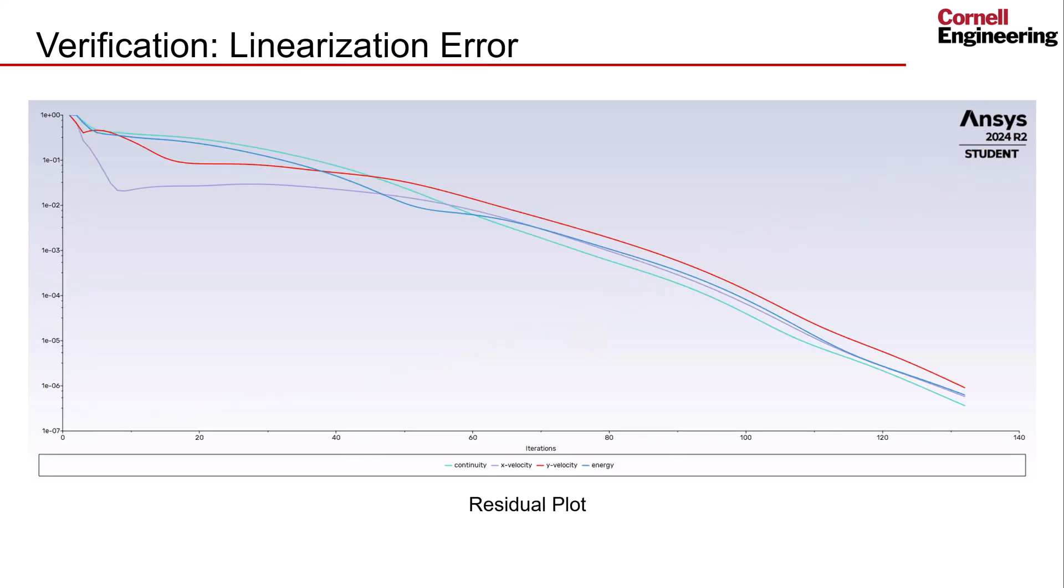Finally, we can work to determine and reduce the numerical errors in our solution process. This can be addressed in two ways. Firstly, the convergence criteria can be reduced so that the solver runs for more iterations. This reduces the linearization error and will help the results converge further. This can be accomplished by changing the residual value at which the iterations stop to a smaller number. Here, we had it set to 10 to the negative 6, but this can be reduced further.